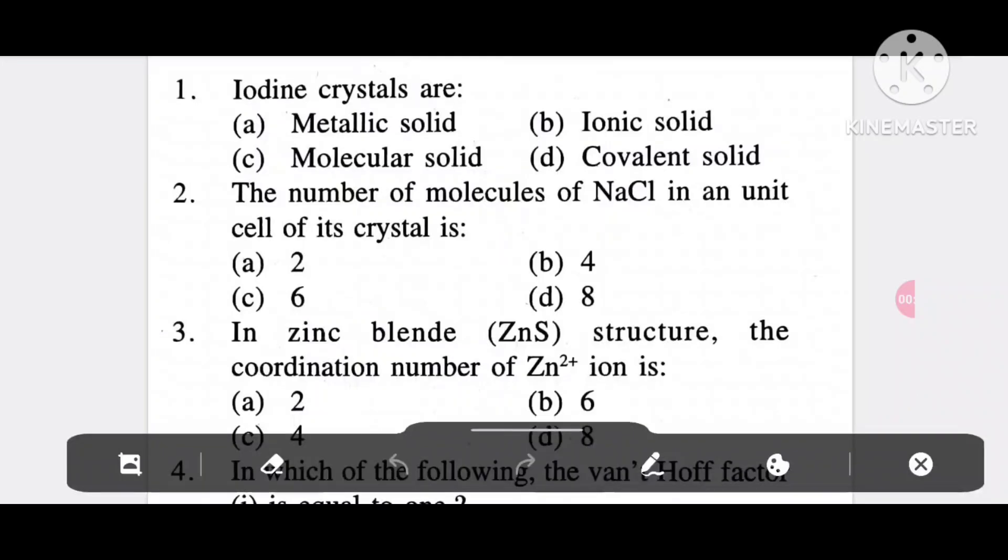Question 1: Ice crystals are molecular solid, option C is the correct answer. Question 2: The number of molecules of NaCl in a unit cell of its crystal - option B, 4.